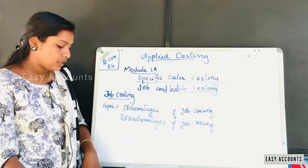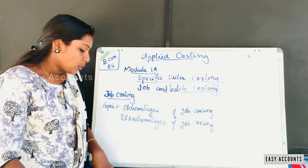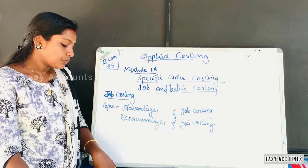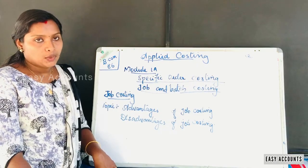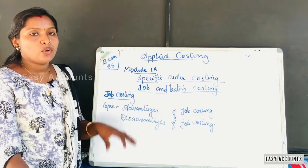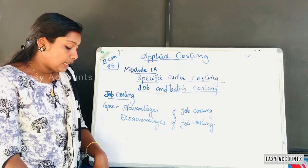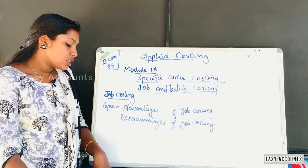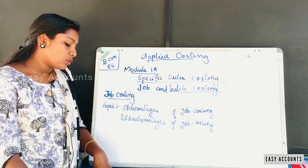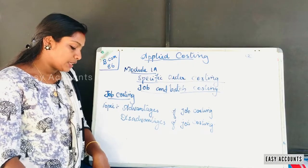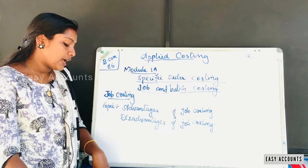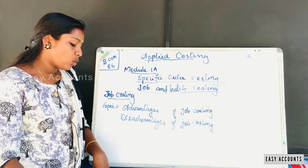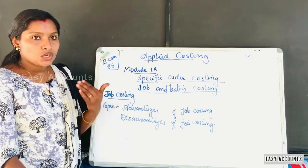Now we will study the detailed cost data. The advantages and objectives include the cost of material, direct wages, direct expenses, and overhead for a job or work order.